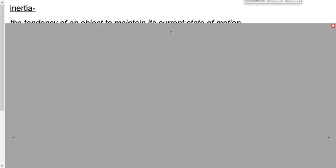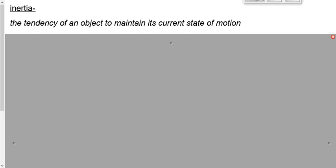Another term, inertia. This goes to the first law that we talked about. Inertia means the tendency of an object to maintain its current state of motion. In other words, we could say it's the tendency of an object to keep doing what it's doing. An object at rest will stay at rest, or at least it wants to. An object in motion wants to stay in motion. It's the tendency of an object to keep doing what it's doing now.